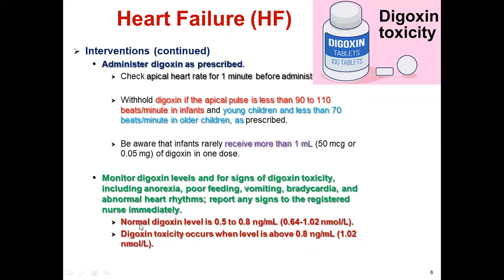The normal digoxin level is 0.5 to 0.8 nanograms per mL. Digoxin toxicity occurs when the blood level is more than 0.8 nanograms per mL or 1.02 nanomoles per liter. If a patient shows vomiting or any sign of digoxin toxicity, the first priority is do not administer a second dose. Monitor the blood level — the therapeutic range is 0.5 to 0.8 nanograms per mL.